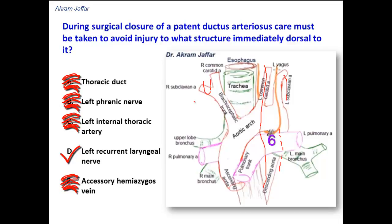The distal part of the 6th aortic arch on the left side forms the ductus arteriosus, but on the right side the distal part of the right 6th aortic arch disappears. In addition, the 5th aortic arch disappears on both sides, so the nerve will recur around the derivative of the 4th aortic arch. On the right side, the derivative of the right 4th aortic arch is the right subclavian artery — that is why the nerve recurs around the right subclavian artery. On the left side, it retains its relation to the artery derived from the 6th aortic arch, which is the ductus arteriosus.